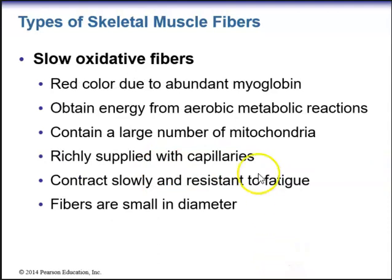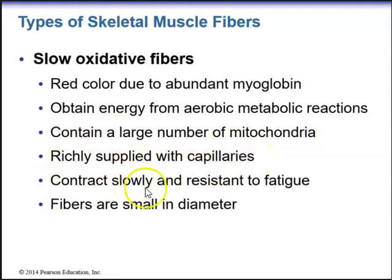Slow oxidative fibers are red fibers, red due to abundant myoglobin. They obtain energy from aerobic metabolic reactions requiring oxygen, contain a large number of mitochondria, and are richly supplied with capillaries. They contract slowly and are resistant to fatigue. These fibers are very small in diameter and, as long as enough oxygen is present, deliver prolonged contractions. They make up many fibers in postural muscles of the lower back, which must contract continuously to keep the spine straight. However, because they are thin, slow oxidative fibers do not generate much power.